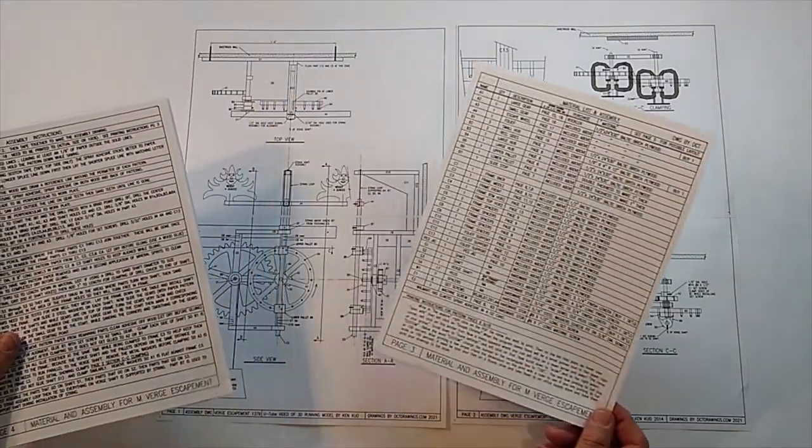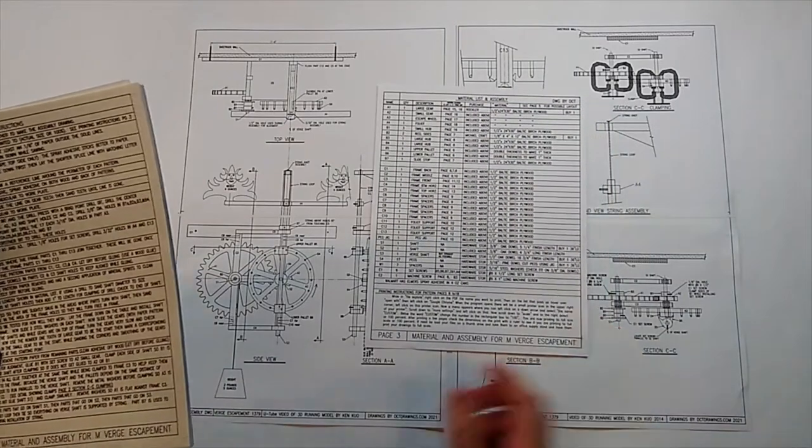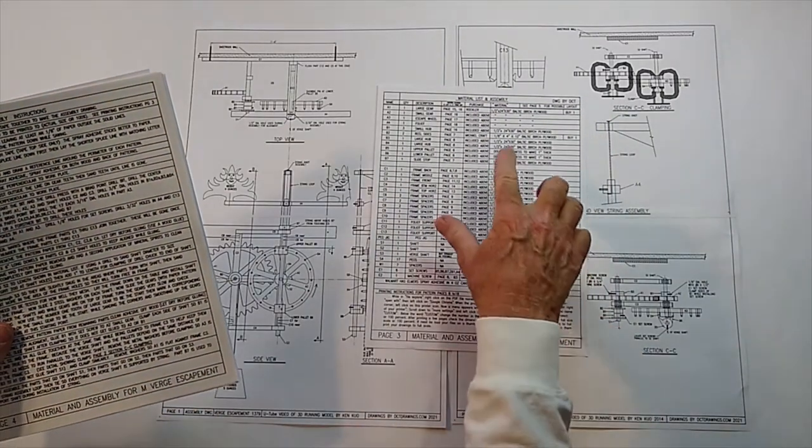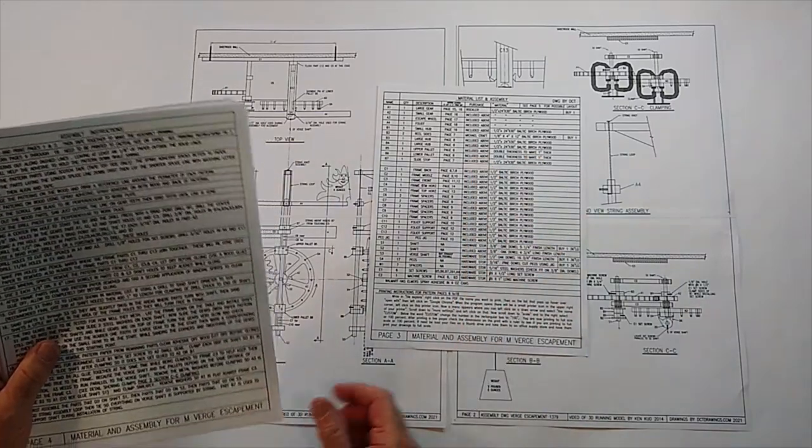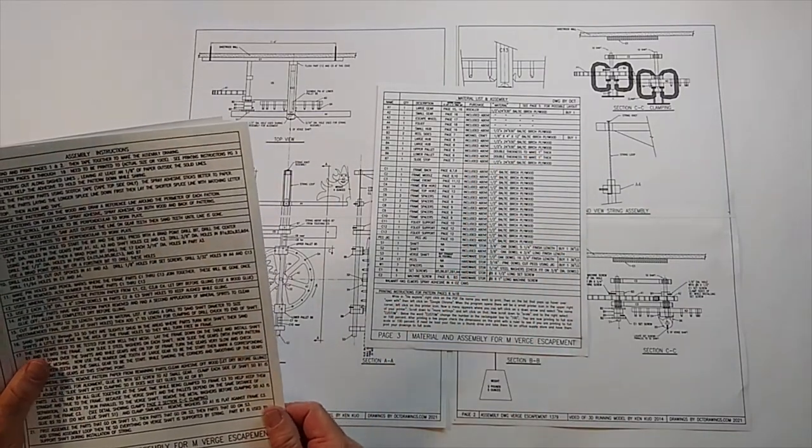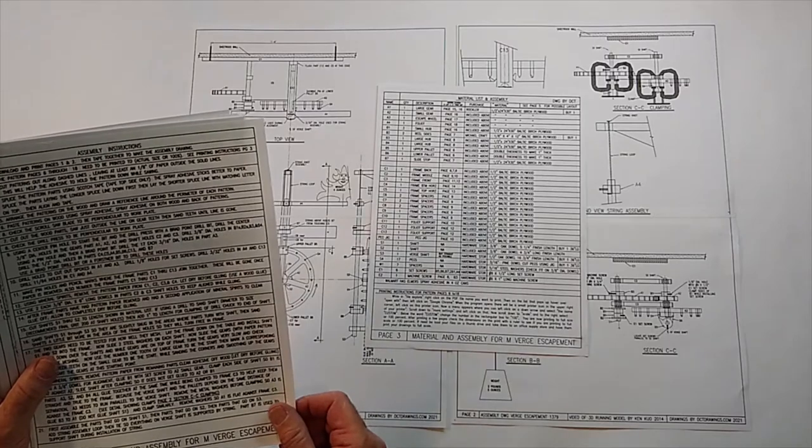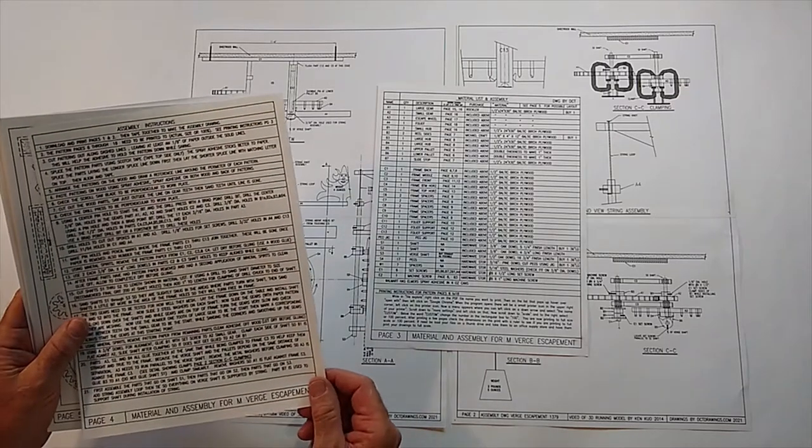There's a material list, and it defines basically where you could buy these products. Sometimes I just say like hardware store, that could be obviously several places.